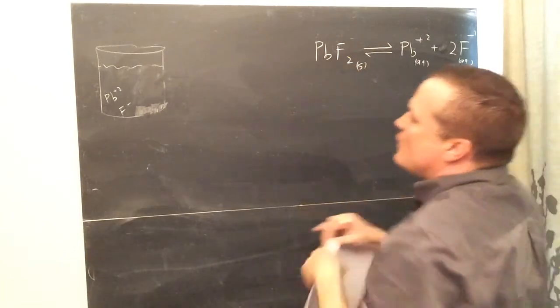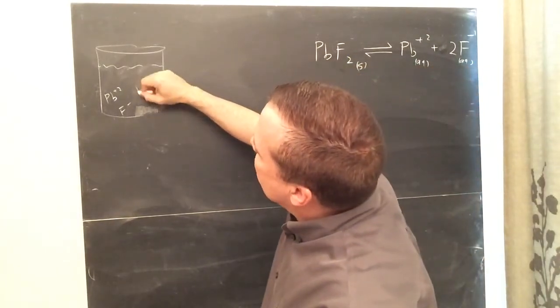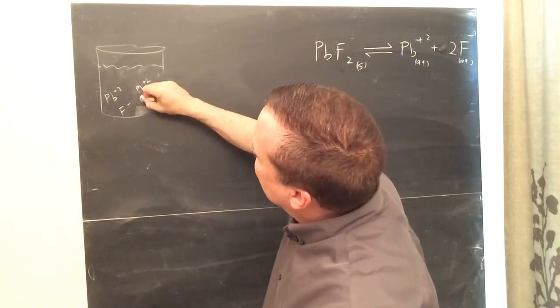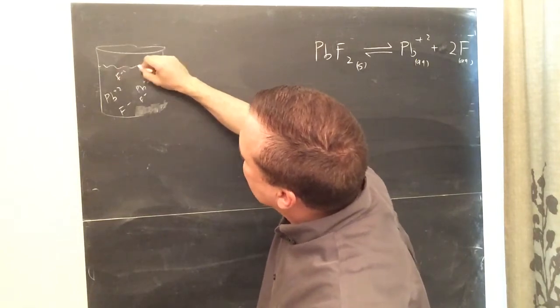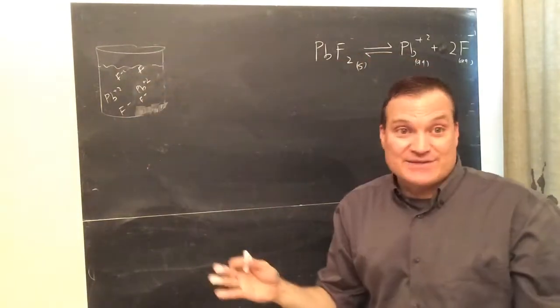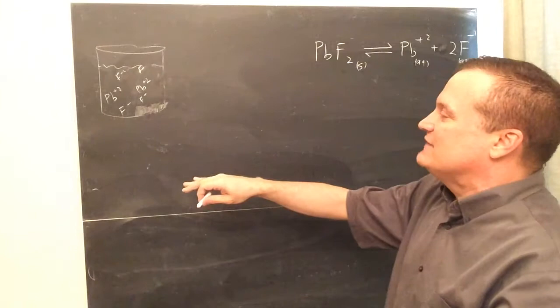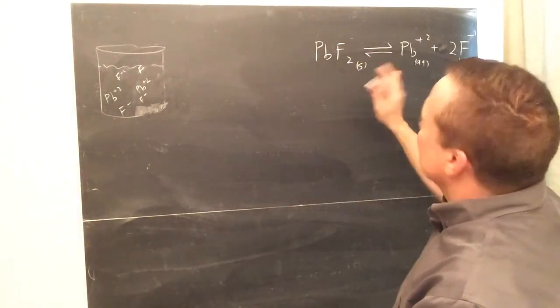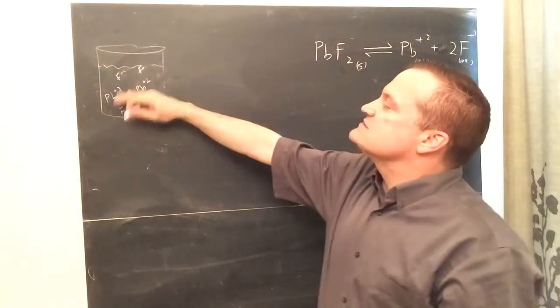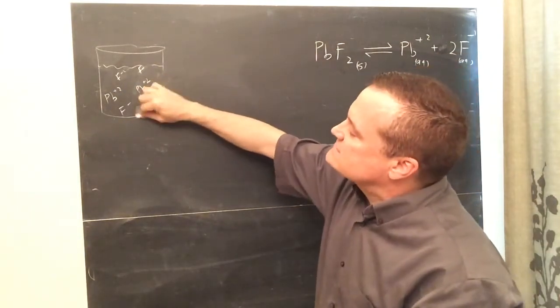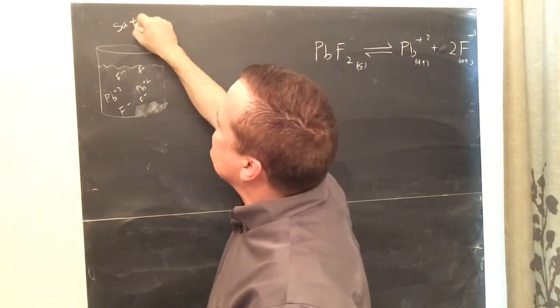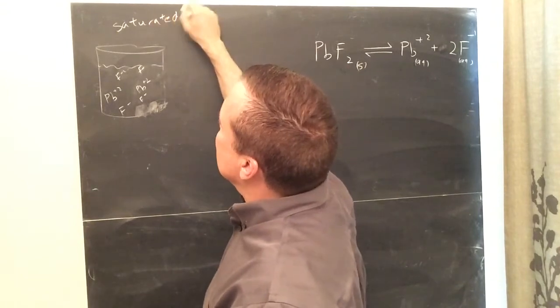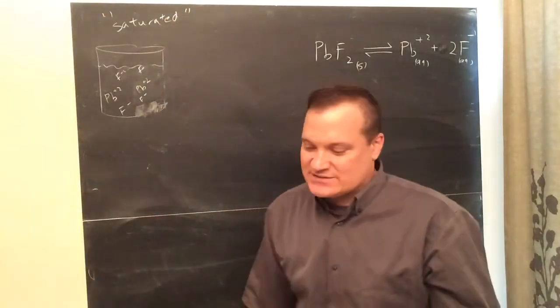Shift to the right means more of this will now dissolve to replace everything that was lost. But it will only replace it back to the same level, saturation level. Okay, so anyway, there it is. So anything insoluble, as long as you have a solid amount, and that word saturated, you'll see normally it has to be a saturated solution.